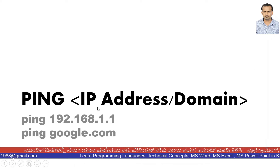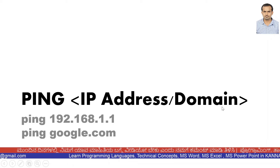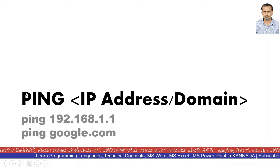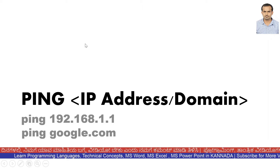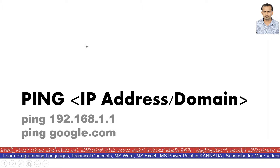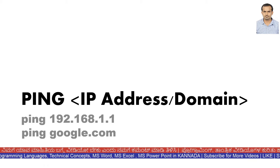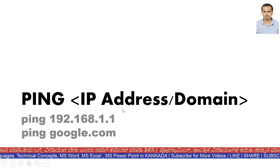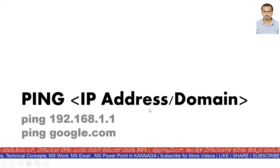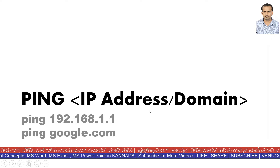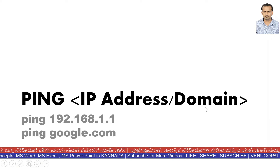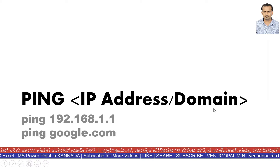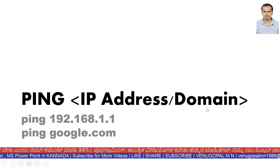The PING syntax is: ping followed by an IP address or a domain name. You type this in the command prompt on Windows, Mac, etc. Using this, you can connect to an IP address, a domain, or check whether the network responds to the domain.